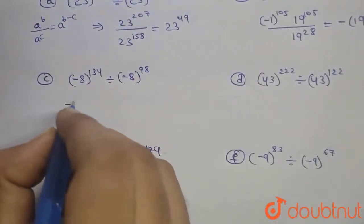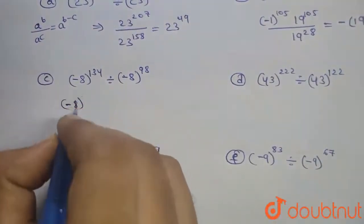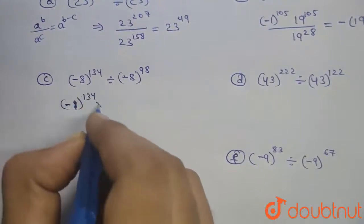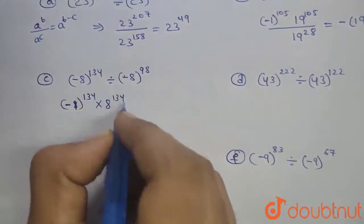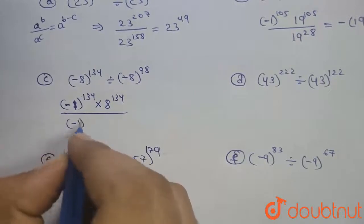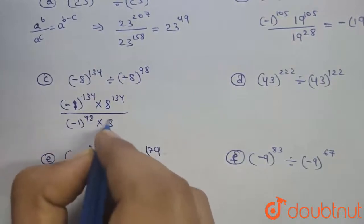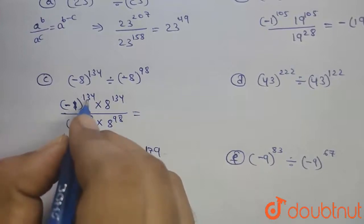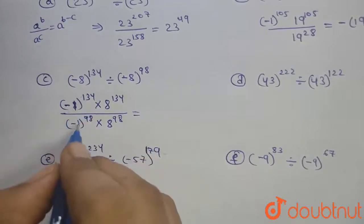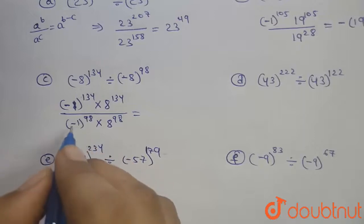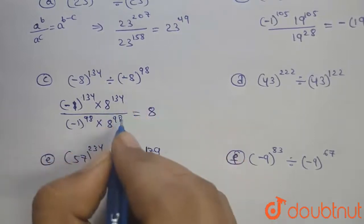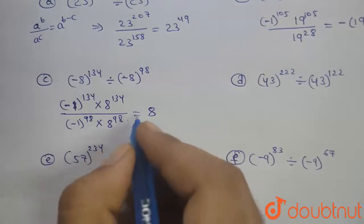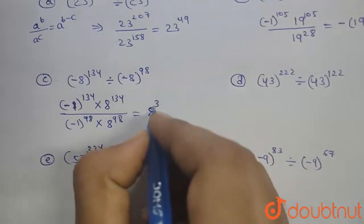Now, minus 8 power, minus 1 power 134 into 8 power 134 divided by minus 1 power 98 into 8 power 98. Minus 1 power even number is positive. Minus 1 power 98 is even number, therefore it is positive. Therefore, 8 power 134 minus 98 which is equal to 36.